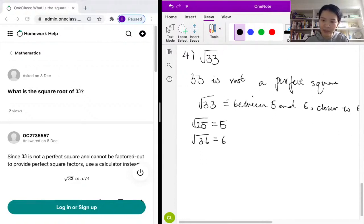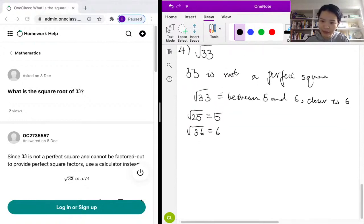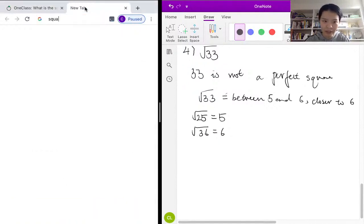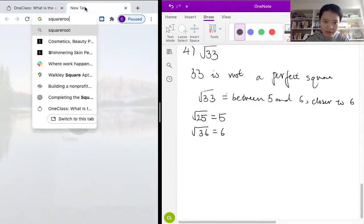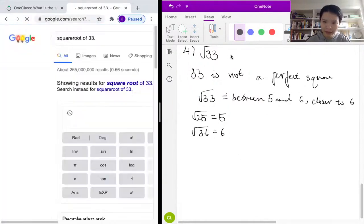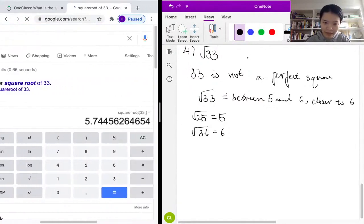That's the best we can do at the middle school or high school level to estimate the square root of 33. In order to find the exact value of the square root of 33, we'll use a calculator. We know the square root of 33 is approximately 5.74.